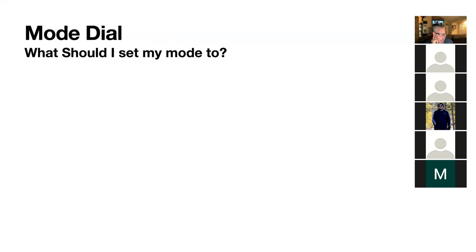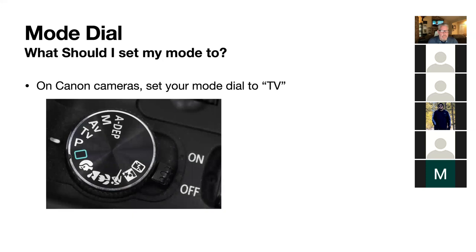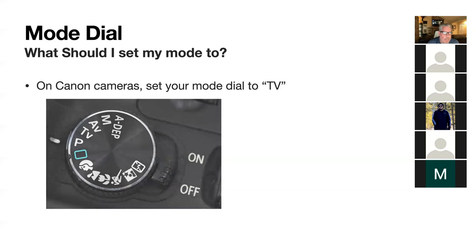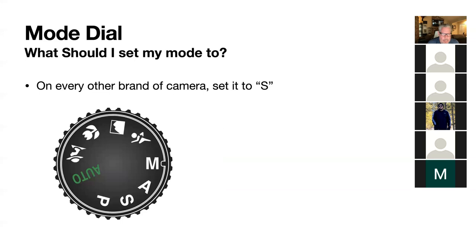In the shutter speed concept, what should you set your mode to? For this week's class, if you have a Canon camera, you're going to put the mode dial to TV - which oddly enough does not stand for television, it stands for time value. Canon is the one company that does this. If you have any other camera, you're going to put it to the S mode. For this week, you're either going to have it on S or TV, whichever brand camera works for you.